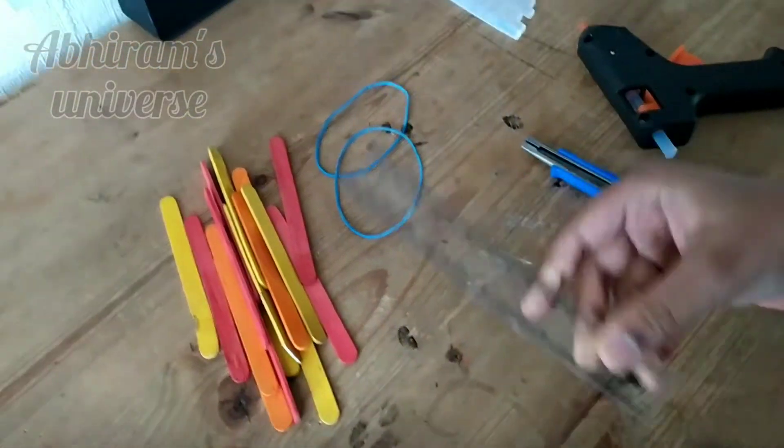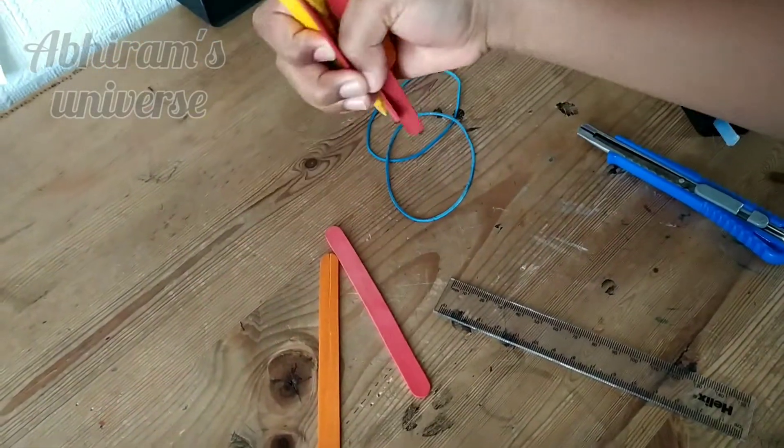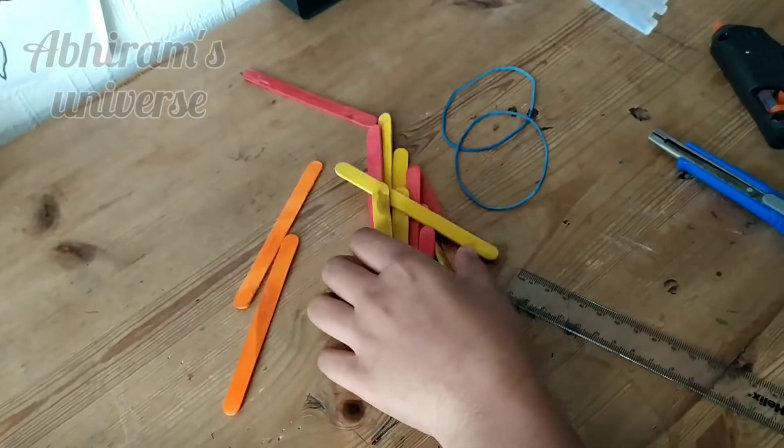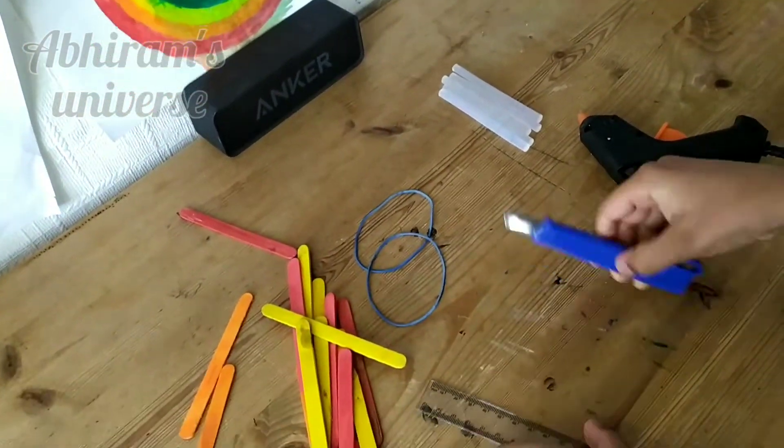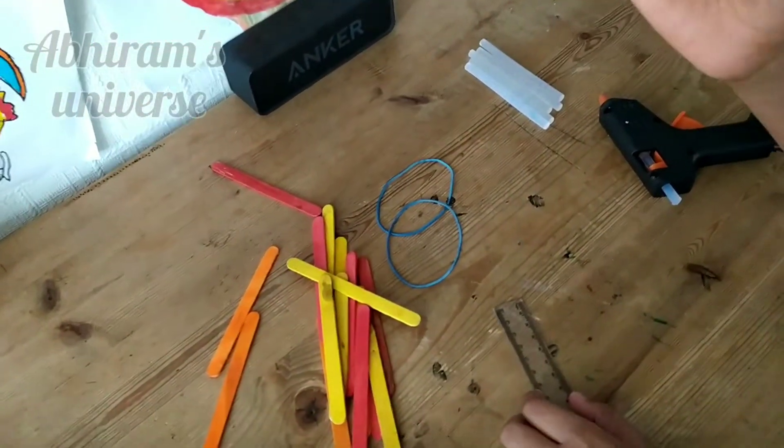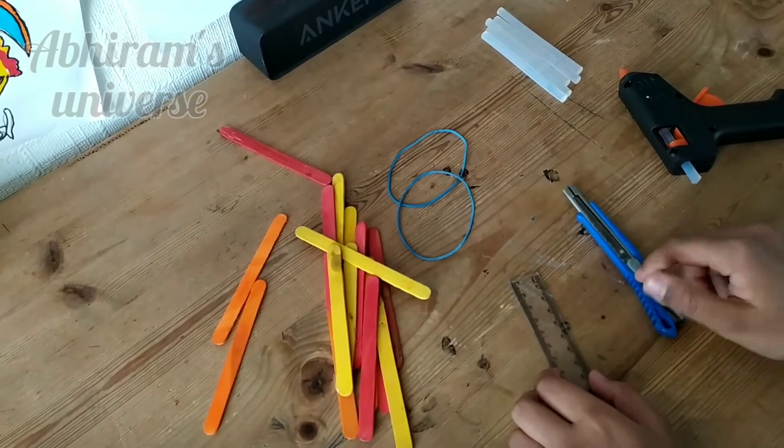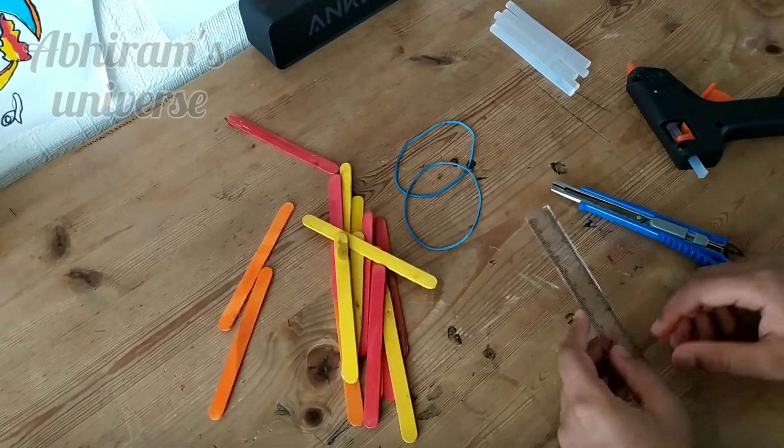You will need a ruler, lots of popsicle sticks, and a hot glue gun for sticking. We also need a blade - be careful with the blade because it's really sharp.